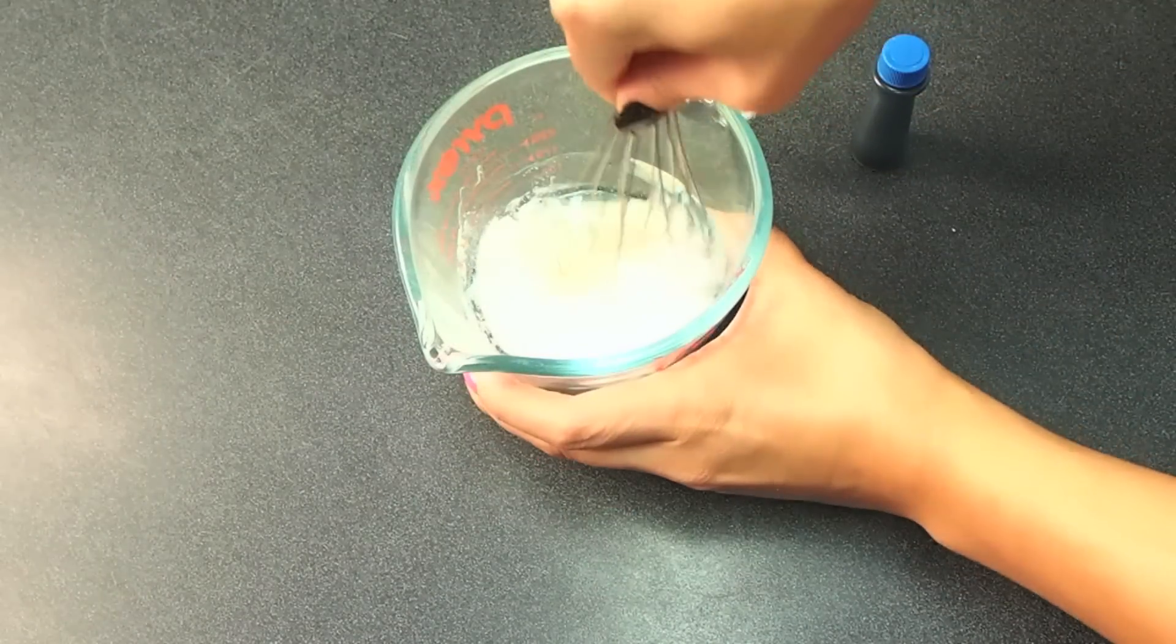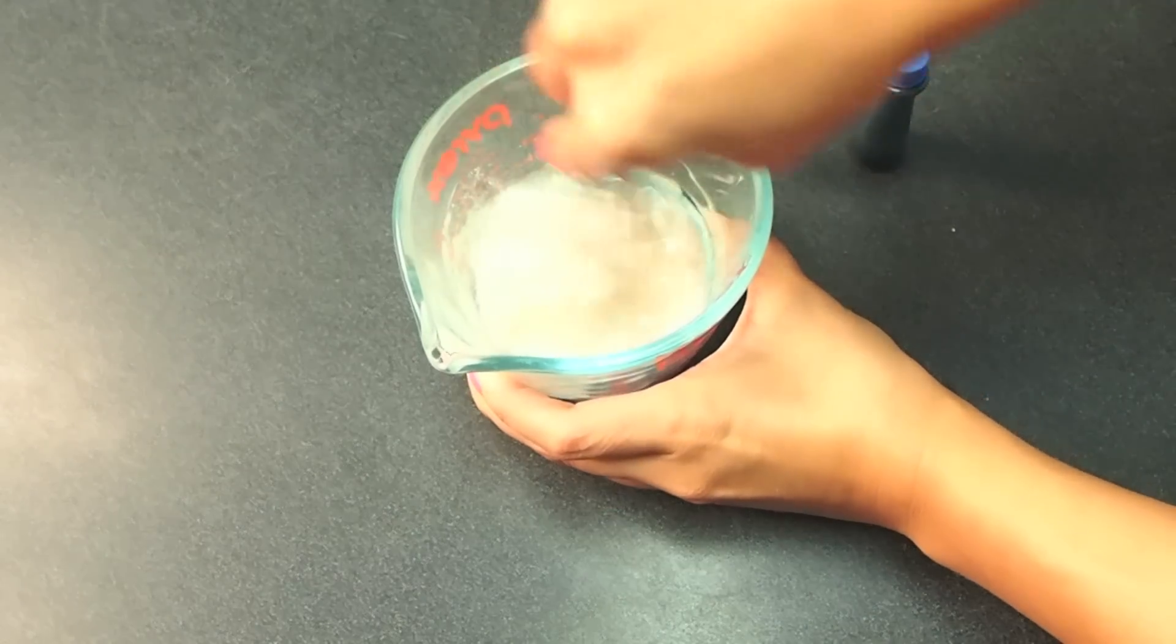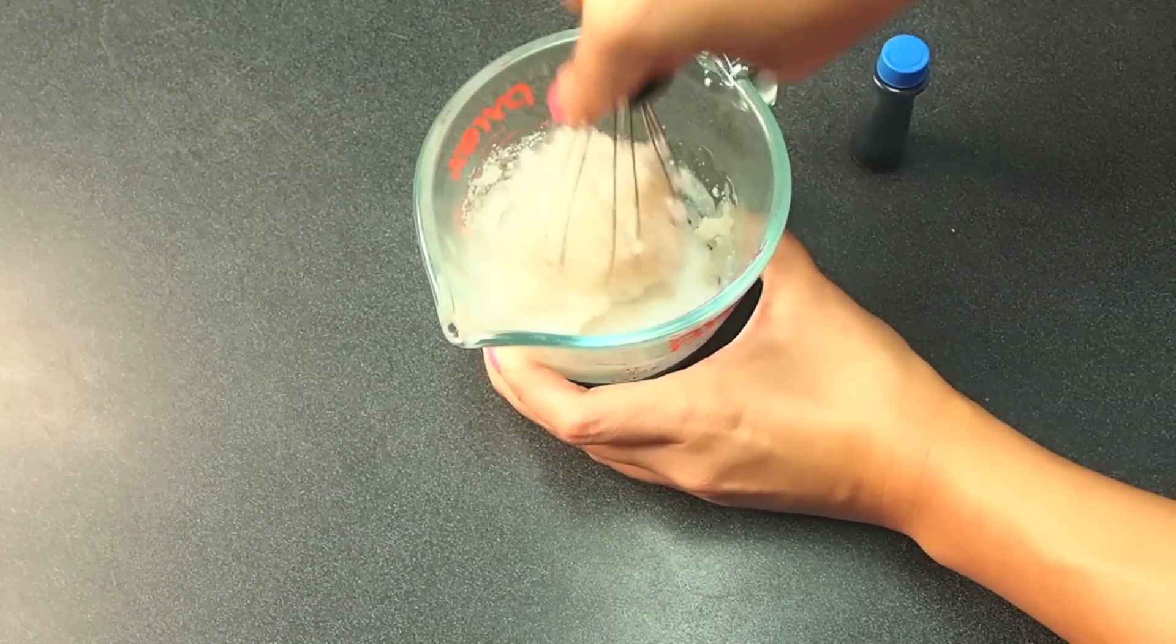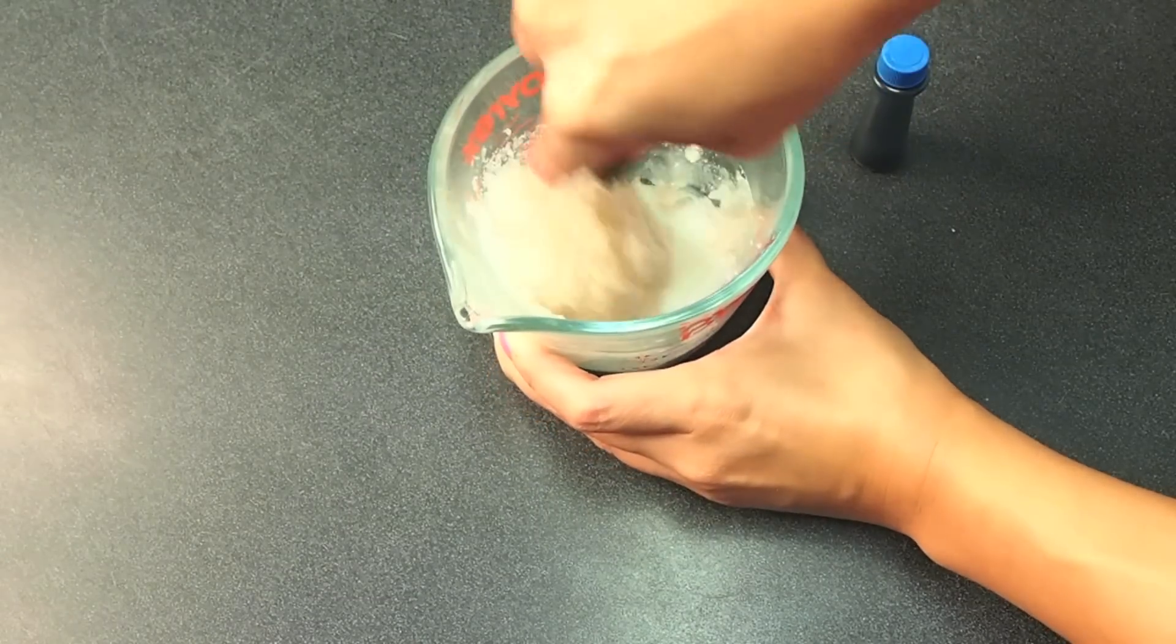Then you just want to go in there and give it a nice whisk. You're going to add in that blue color and tint after it's bubbly. So just mix it. It's going to be clumpy—it's totally fine.